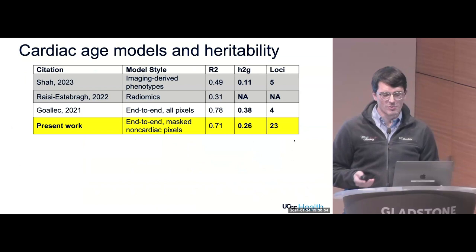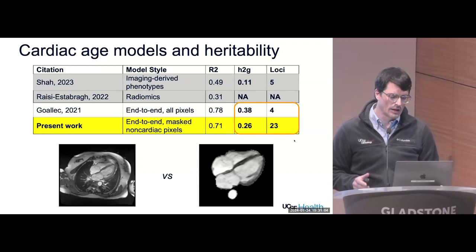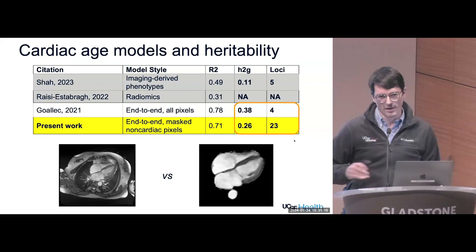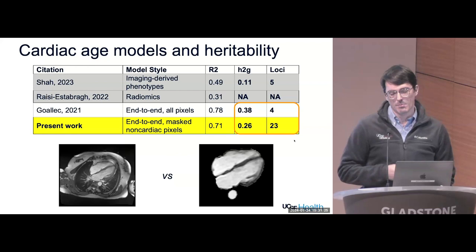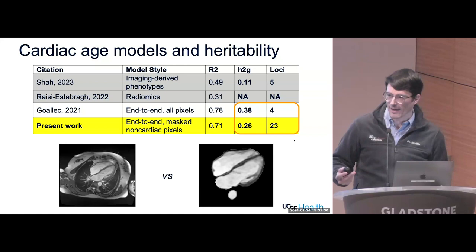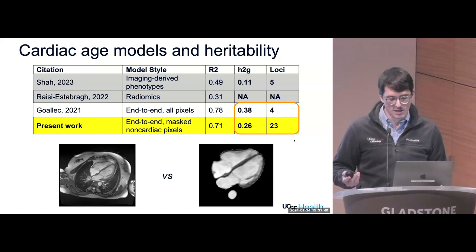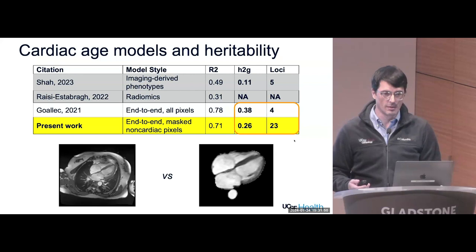How does this relate to prior work? Most prior studies also looked at genetics. Focusing on the other end-to-end deep learning paper — the most similar to ours — they have a higher R-squared and much higher heritability. Yet we identify 23 loci while they found only four, using very similar sample sizes in literally the same UK Biobank participants. This likely relates to the specificity of the phenotype: pulling in all external structures teaches you something, but it's not necessarily cardiovascular-specific.